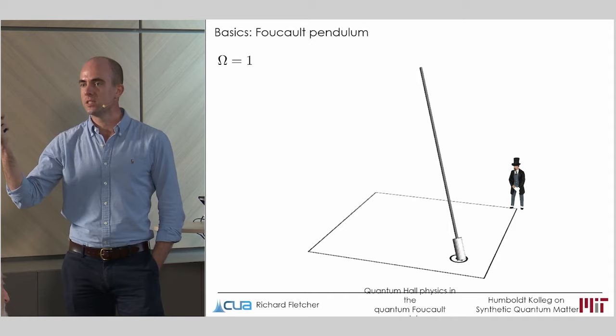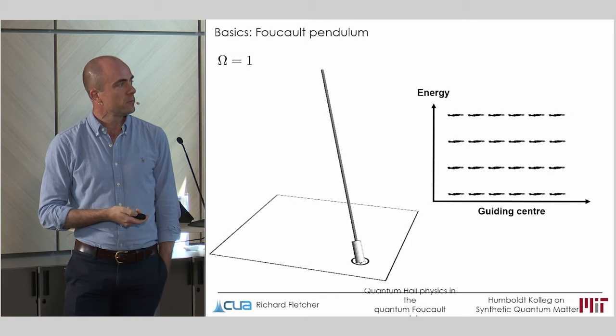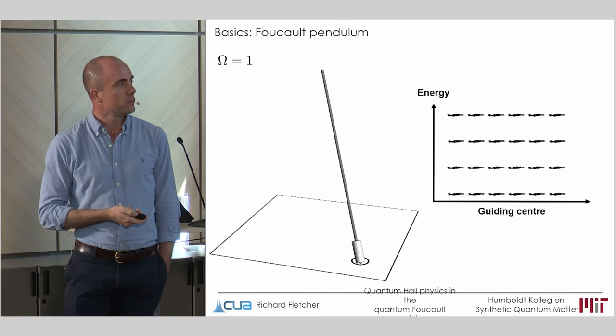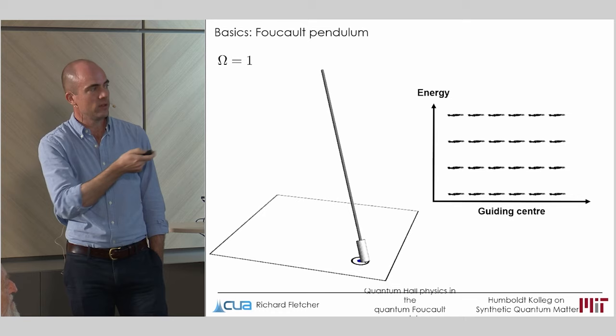So without doing any calculation, we know that the spectrum must separate into discrete Landau levels, each with some colossal degeneracy corresponding to our choice of where we place our guiding center within 2D space and with the spacing set by the energy levels of the cyclotron harmonic oscillator.